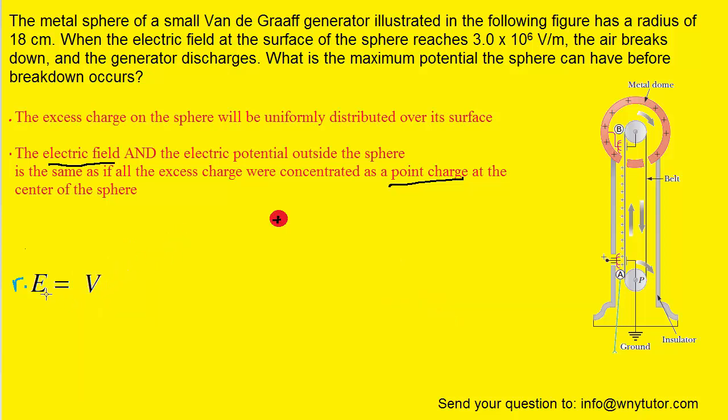And so we would be left with the following equation that relates the electric potential produced by the sphere to its electric field and its radius. Now this equation is sort of written backwards, so why don't we just flip it around for simplicity.